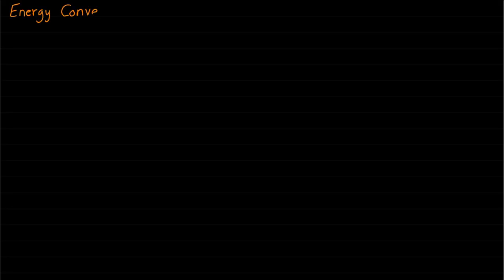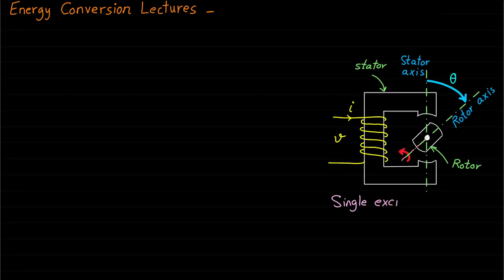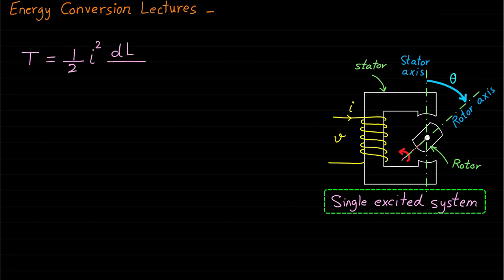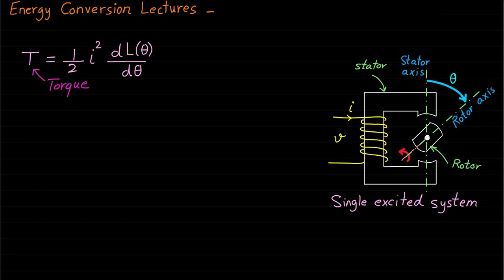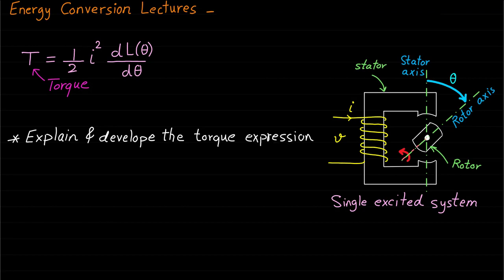Welcome back to the Energy Conversion Lectures. In a previous couple of lectures, we have developed and explained the torque expression for the single excited rotational motion systems. Also, we showed the importance of the inductance variation with respect to rotor position in developing the torque. In this lecture and the coming two lectures, we will explain and develop the torque expression for the rotational double excited systems.